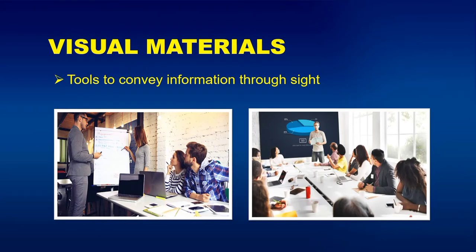Visual Materials: tools to convey information through sight. Visual resources include photographs, film, video, paintings, drawings, cartoons, prints, designs, and three-dimensional art such as sculpture and architecture, and can be categorized as fine art or documentary record. Some visual resources are one-of-a-kind, while others are reproduced, like prints or illustrations in books and magazines. The pictures below show the use of visual aids and charts.